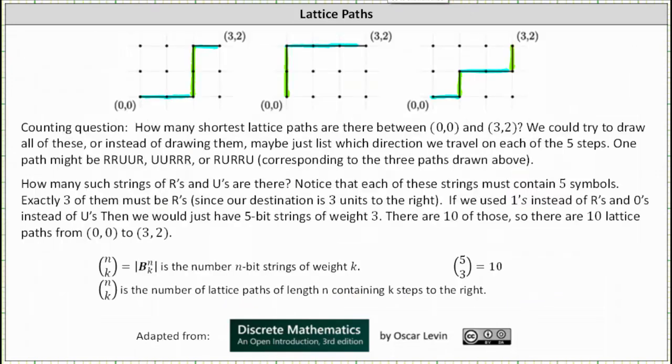Let's consider a counting question. How many shortest lattice paths are there between (0,0) and (3,2)? We could try to draw all of these, or instead of drawing them, maybe just list which direction we travel on each of the five steps. One path might be right, right, up, up, right, which is the first path shown above. Another path might be up, up, right, right, right, which is the second path. Or we might have right, up, right, right, up, which is the third path.